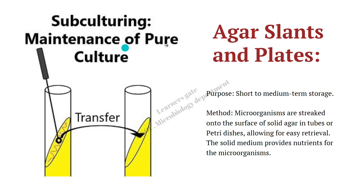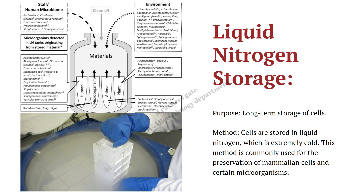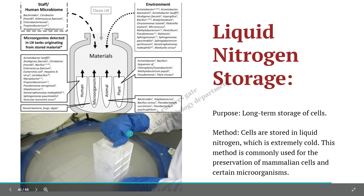Agar slants and plates technique is one of the most easy and day-to-day practiced techniques in microbiological laboratories, where a pure culture at different intervals of time is transferred into fresh media so that it can remain metabolically active. Liquid nitrogen storage is used for long-term storage of cells, very similar to cryopreservation. You have a tank filled with liquid nitrogen, and inside this tank you place microorganism tubes, slants, or vials in different racks.